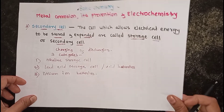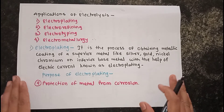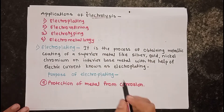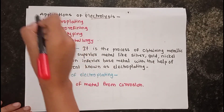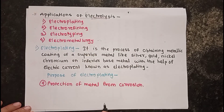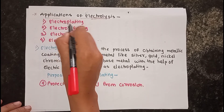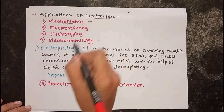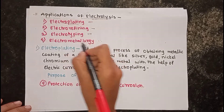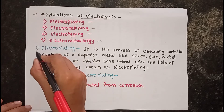The next and last part of this unit covers the applications of electrolysis. These applications are seen in four types: first is electroplating, second is electro refining, third is electrotyping, and the last is electrometallurgy. We will discuss each one by one.